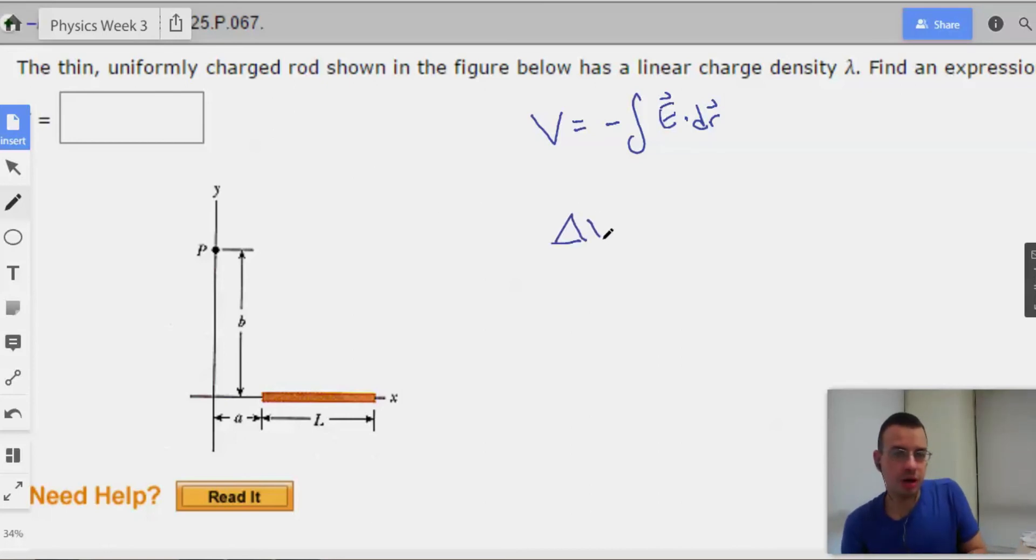So, a small bit of V will equal K, a little bit of Q, over R. A lambda equals a little bit of Q over a little bit of length. Therefore, a little bit of Q equals lambda delta L.